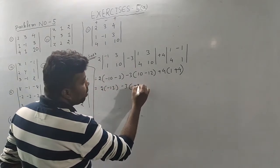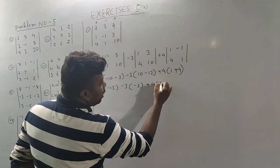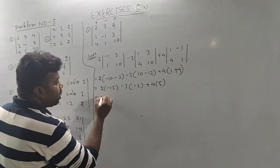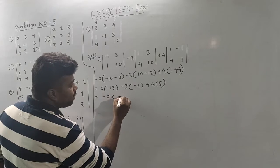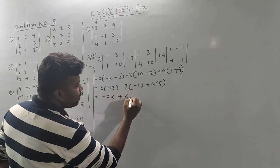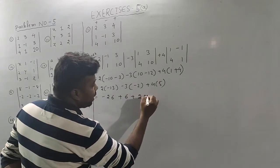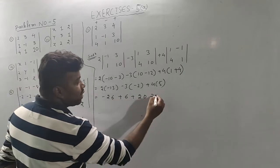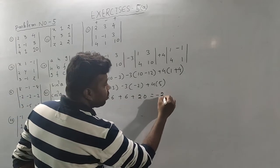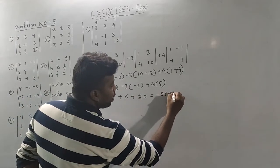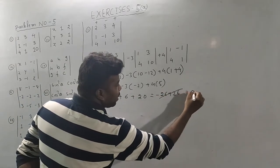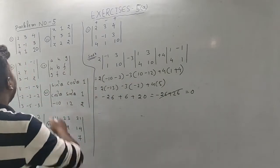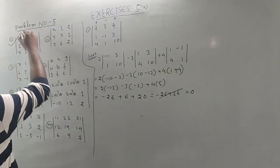Then minus 2, plus 4 into 5. Then minus 26. Then minus 1 is plus 6. Then plus 20. 20 plus 6. Then minus 26 plus 26, then minus 26 plus 26 — these cancel. So it will be easy to do this. The first question is complete.